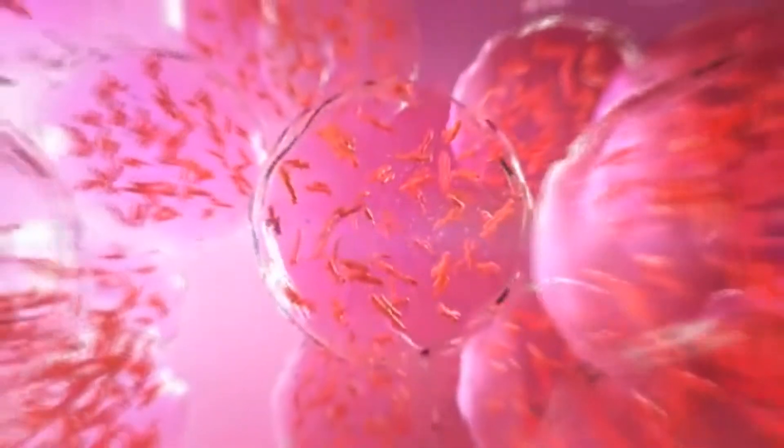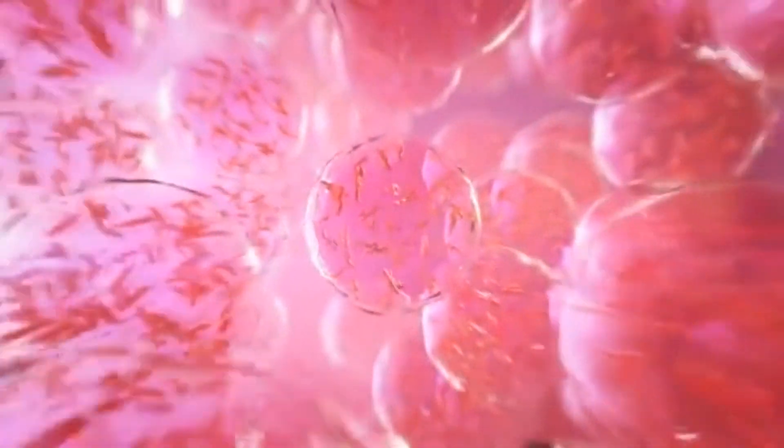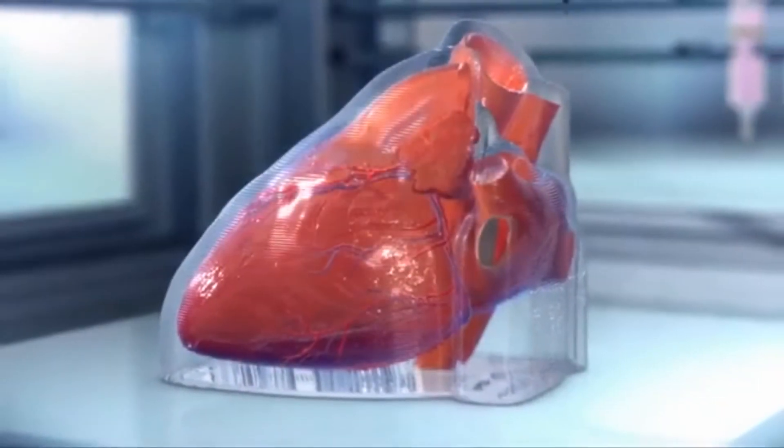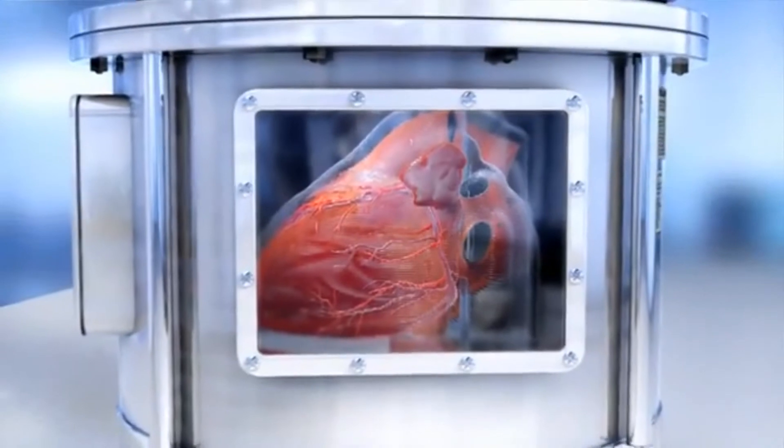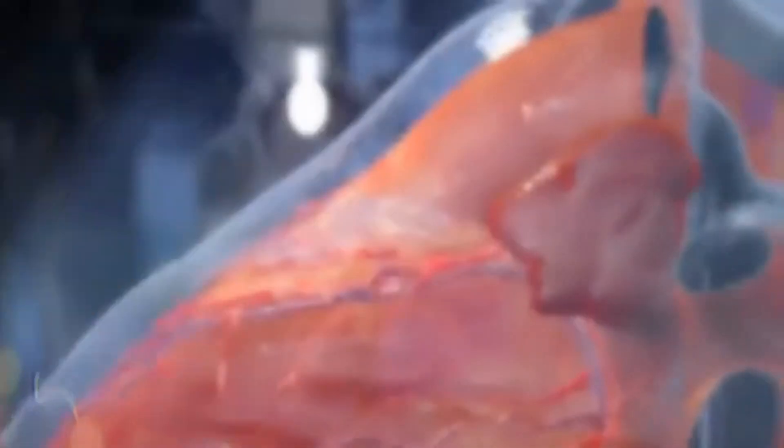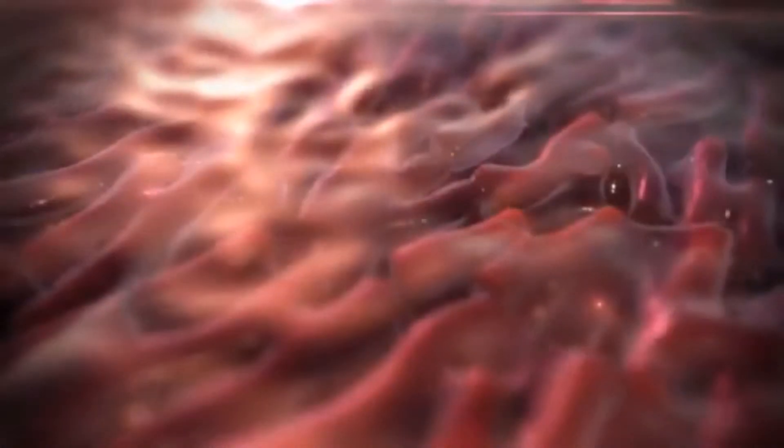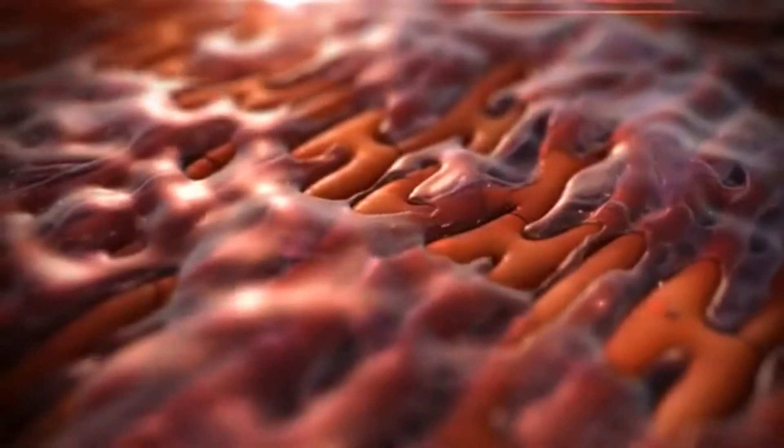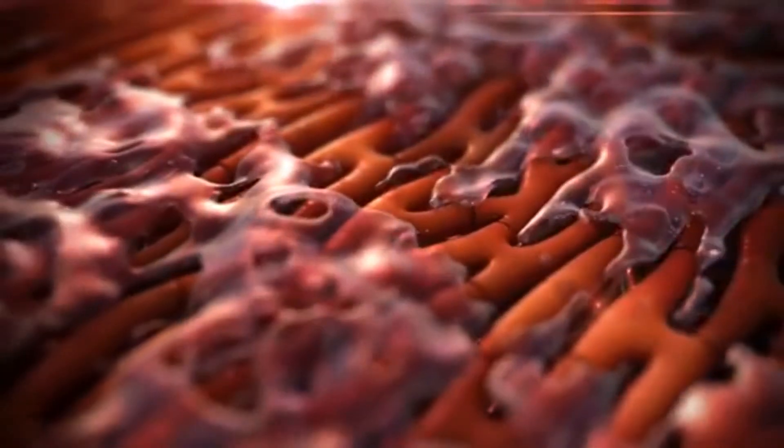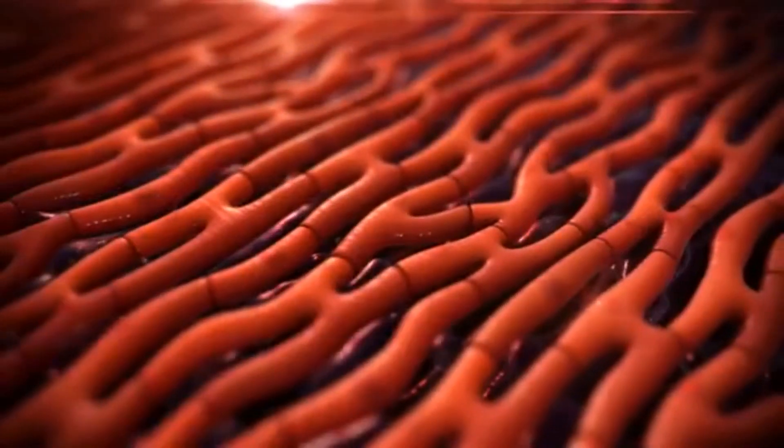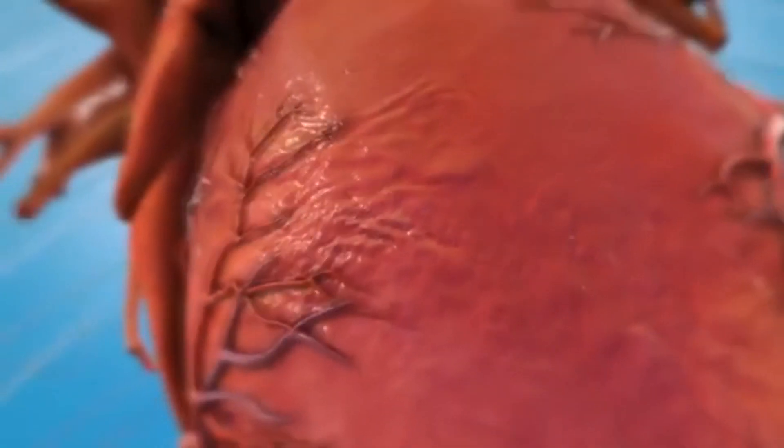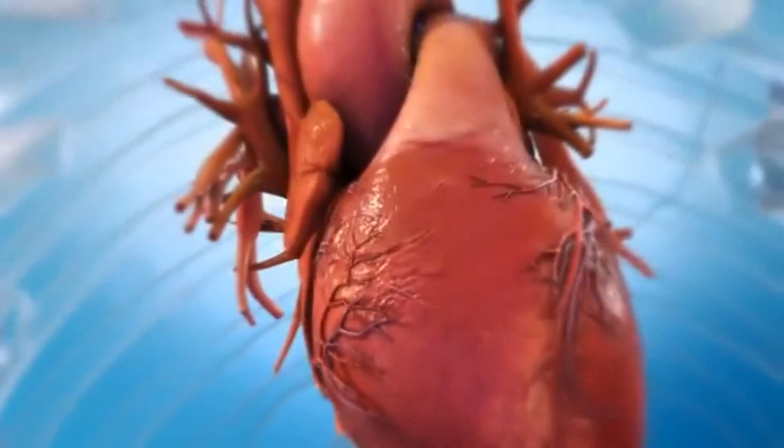The printed organic structure is then moved to a bioreactor, which mimics the conditions within a body. Once the cells have fused and the organ is formed, it can be cooled to a temperature at which the gel becomes liquid, leaving behind a fully functional bioprinted organ.